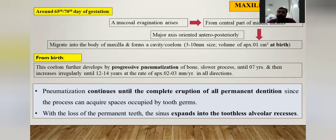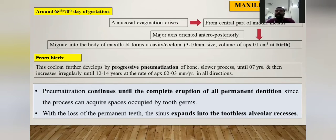In children with erupting permanent teeth, the space previously occupied by permanent tooth germs in the bone is also acquired by the maxillary sinus. In old age, when permanent dentition is lost, the sinus expands into the toothless alveolar recesses as well. This is how development and age-related changes progress.